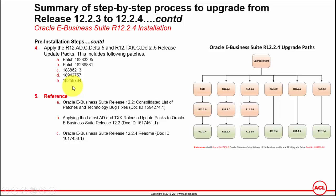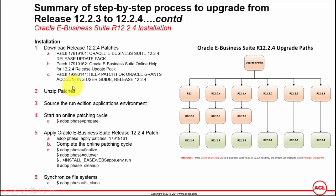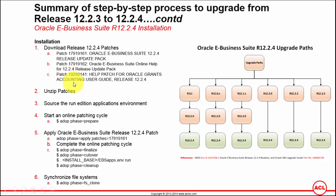Once you are done with these pre-installation steps you can proceed to the actual installation steps to upgrade from release 12.2.3 to 12.2.4. That includes downloading three patches: patch number 17919161, which is the suite-wide upgrade patch for 12.2.4; patch 17919162, which is the help patch for the 12.2.4 upgrade; and patch 19290141, which is the help patch for Oracle Grants Accounting User Guide release 12.2.4.